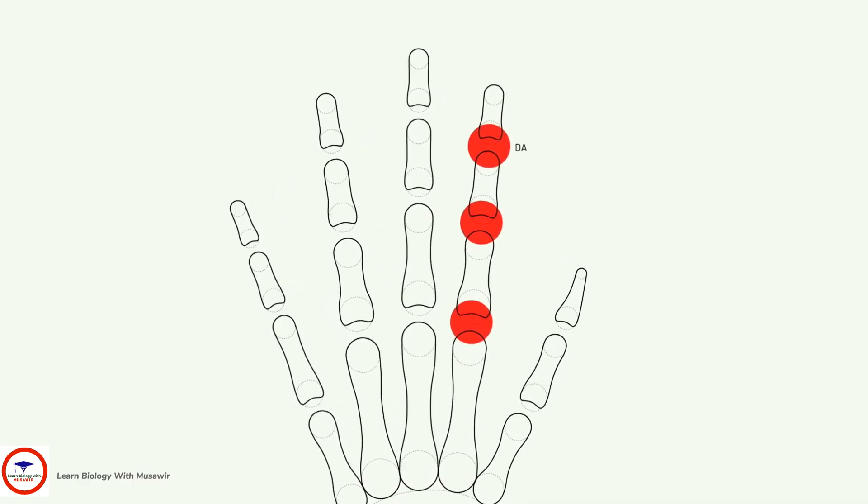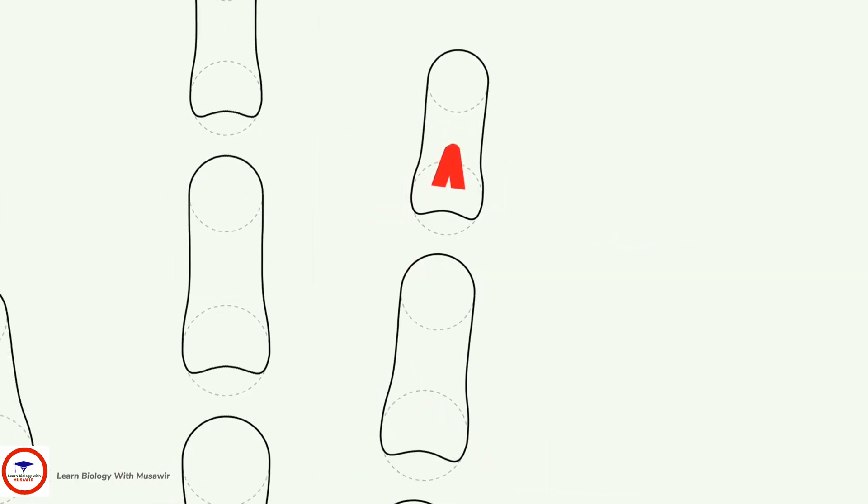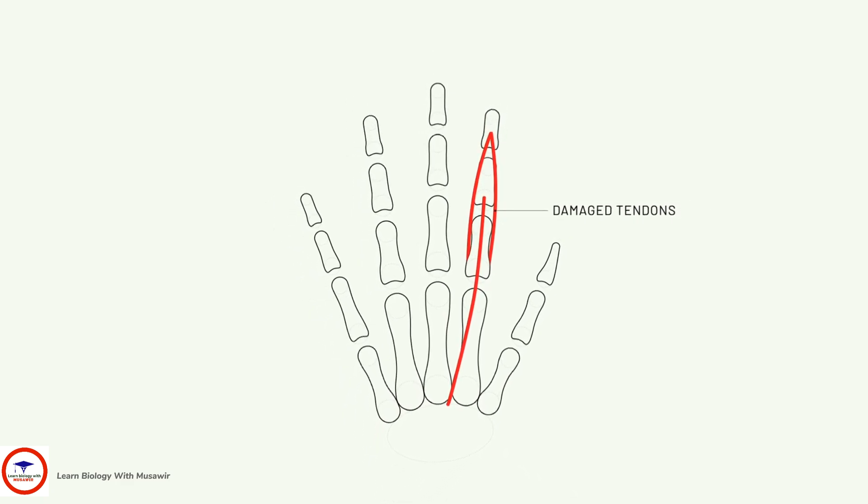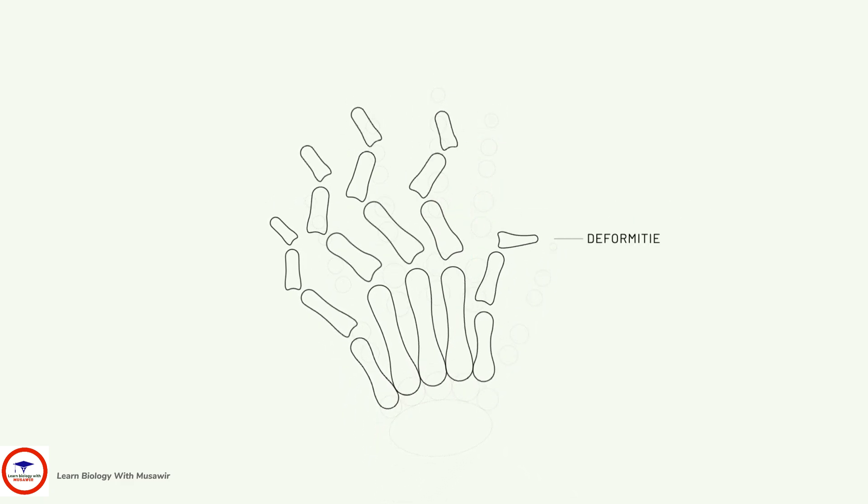Prolonged inflammation of the lining of the joints can cause damage to joint tissue. Over time, without early treatment, the tendons and ligaments that hold the joints together become damaged, which can lead to deformities.